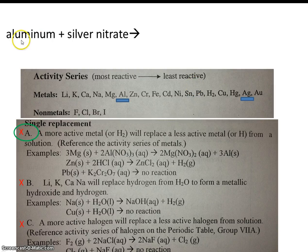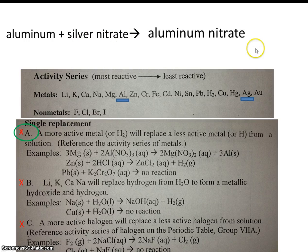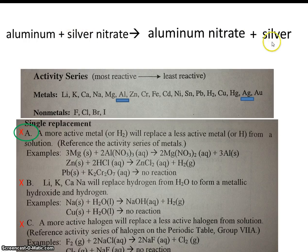So aluminum will come in and take the place of silver. So instead of silver nitrate, we'll have aluminum nitrate. And remember that cartoon? What happened to the guy that was involved with the relationship? In this case, that would be silver. Well, he gets bumped out, and now he's by himself.